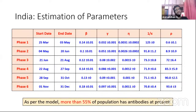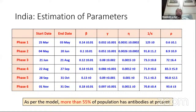That small increase despite people mingling is attributable to herd immunity. Herd immunity is reached when S becomes small enough — in this case below 45% — so the infection doesn't spread because there are more immune people than non-immune. The probability of one person infecting another reduces significantly.